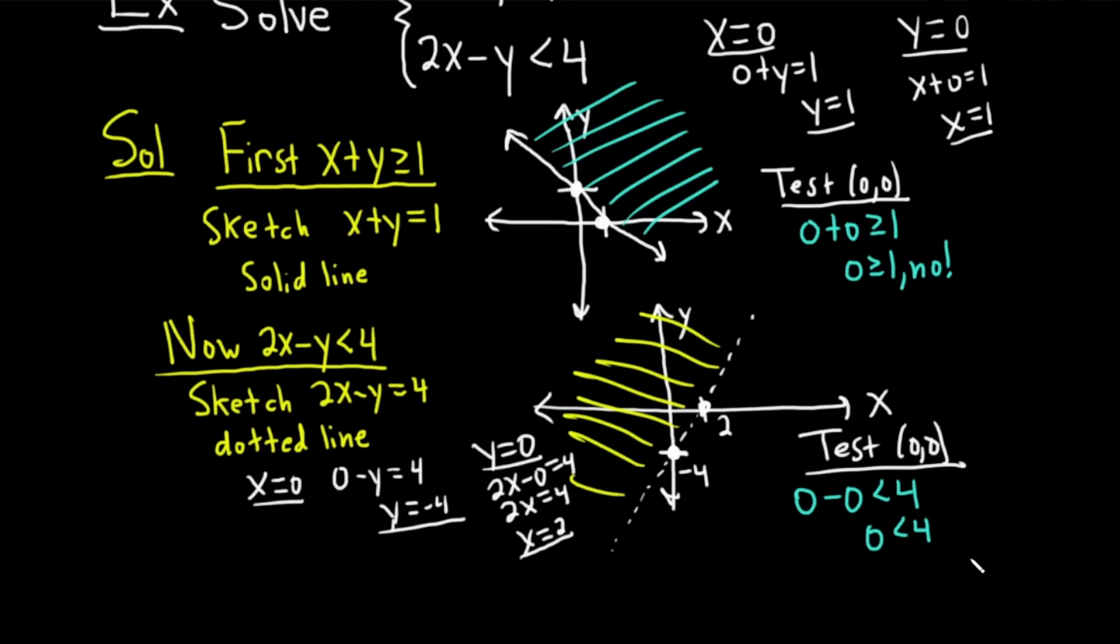Because it was true, the answer is yes. Yes, it's true, so you shade. You saw in the first example, it wasn't true. We picked 0, 0, we shaded in the other part. In this example, we picked 0, 0, it was true, so we shaded in this part. So you can see both cases here.